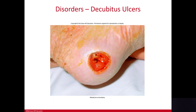Decubitus ulcers are very common over the sacrum of the lower back, the heels, and sometimes the elbows. This is why mobility is so important in bed-bound patients. In the hospital we turn patients every two hours and try to get them up, out of bed, and moving as soon as possible.